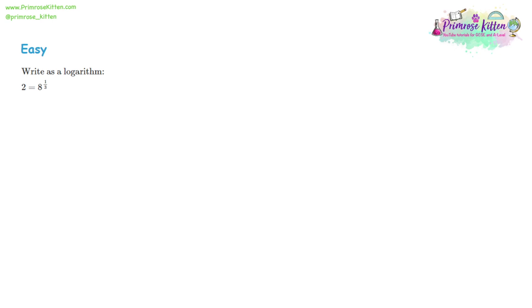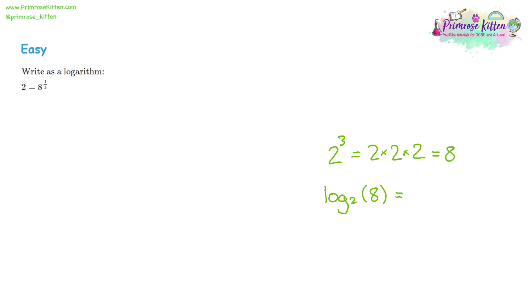We are going to have a look at logarithms, and the first thing to do is explain what they are. Let's take the statement two to the power of three. Two to the power of three means we take three twos and multiply them all together, and the answer is eight. A logarithm is that expression working backwards. So log₂8 is the opposite of two to the power of three equals eight — it's saying how many twos will it take to multiply together to get eight? We know it takes three twos, so log₂8 equals three.